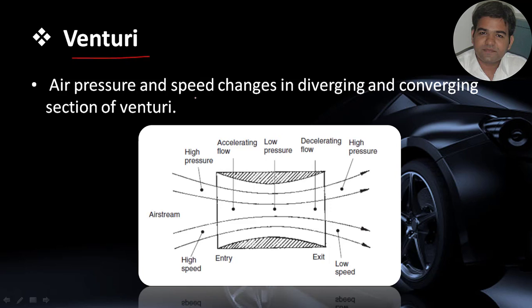The venturi effect describes how air pressure and speed — in terms of velocity — change in diverging and converging sections. In this figure we can observe the venturi shape: a converging section followed by a diverging section, with the air stream moving through it. Before the air stream enters the converging section, moving air particles have enough space, so they come near each other and pressure is comparatively high while velocity is lower.